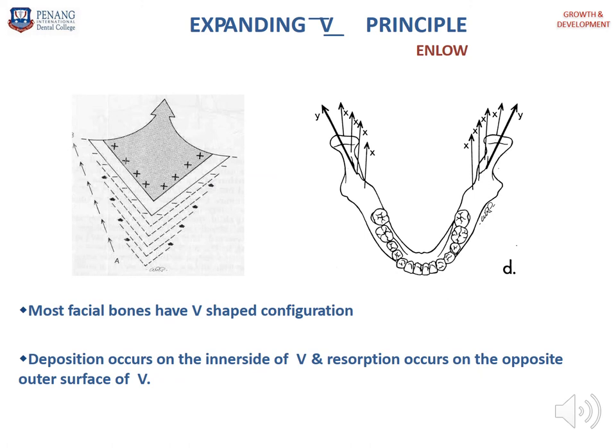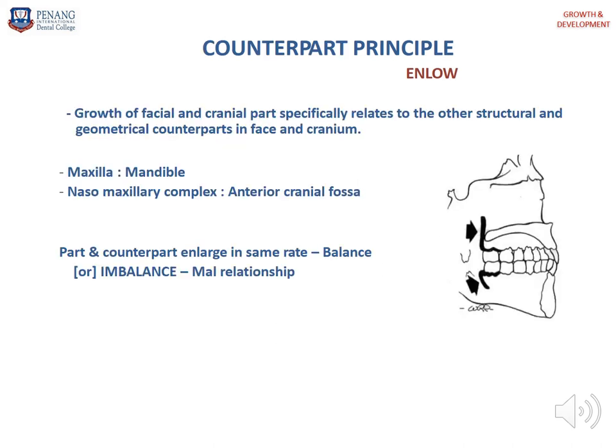Van Limburg summarized: the chondrocranial growth is mainly controlled by intrinsic genetic factors; cartilaginous parts should be considered as growth centers; suture growth is controlled mainly by influences from skull cartilage and adjacent structures; and periosteal growth largely depends on growth of adjacent structures. The next concept is the expanding V principle by Enlow. Most facial bones have a V-shaped configuration — deposition occurs on the inner side of the V and resorption on the outer surface. The parts and counterpart concept states that the maxilla's counterpart is the mandible, and the naso-maxillary complex's counterpart is the anterior cranial fossa. If parts and counterparts enlarge at different rates, it causes imbalance and malocclusion.